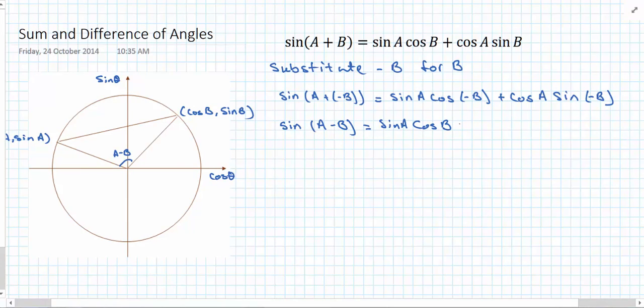And sine is an odd function. So sine of negative b is the same as negative sine b. So that ends up being negative cos a sine b. And that is the relationship for sine of a minus b.